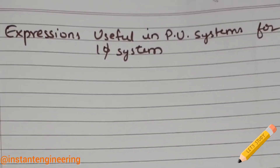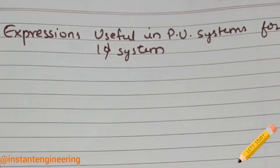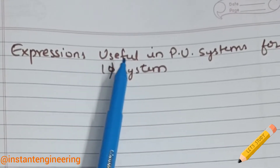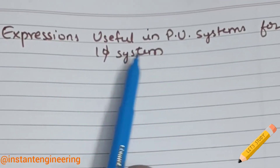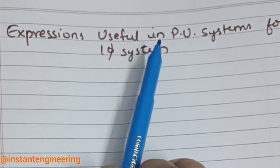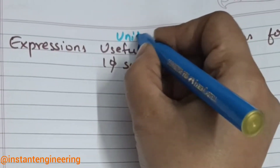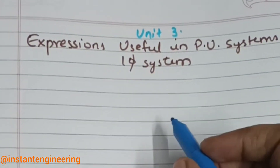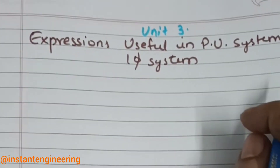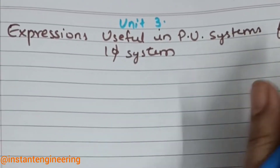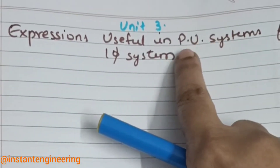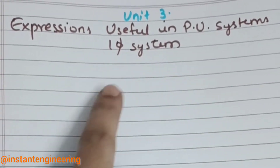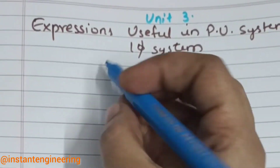Welcome back to my channel Instant Engineering. This is for EEE students, Power Systems 2. We are going to derive an expression in per unit (PU) systems for a single phase system — this comes under Unit 3. It is one of the expressions which will be asked frequently, and we will make it clear and easy to remember. We are going to derive the voltage and current equations in per unit systems for a single phase system.